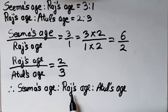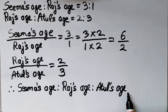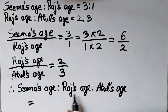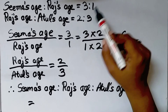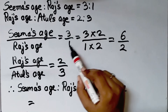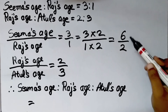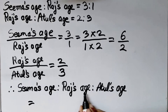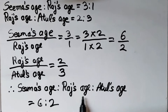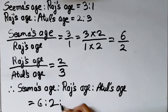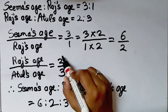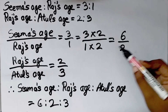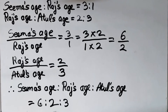Therefore, Sima's age is to Raj's age is to Atul's age equals 6 is to 2 is to 3. We use the updated ratio 6 is to 2 for Sima to Raj, and Raj to Atul remains 2 is to 3. So if the second term of the first ratio is not the same as the first term of the second ratio, we multiply the ratio by a suitable number to make them equal. This is the final answer.